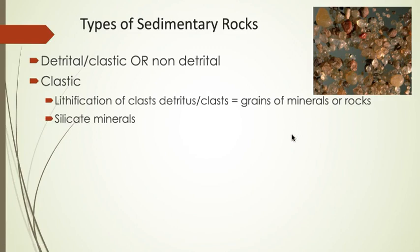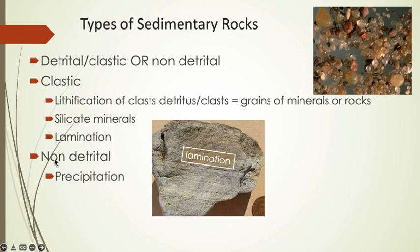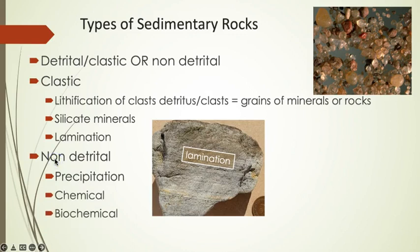Clastic rocks may show fine layering or lamination. Non-detrital rocks form through precipitation of mineral crystals. This happens through chemical reactions in water or from the biologic action of animals. Think of an invertebrate like a snail building a shell to protect its body. In some cases, non-detrital rocks are composed entirely of organic matter.